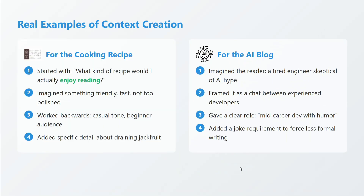For the cooking recipe example, start with: what kind of recipe would I enjoy reading? If someone outputs generic text with no personality, you won't enjoy it. Imagine something friendly, fast, not too polished — work backwards: casual tone, beginner audience, add specific details like draining jackfruit. For the AI blog, imagine the reader — a tired engineer skeptical of AI hype. Identify your audience clearly. Frame it as a chat between experienced developers. Give a clear role — mid-career dev with humor — and add a joke requirement to force less formal writing.